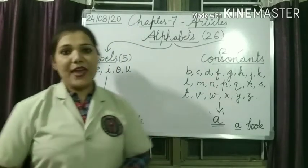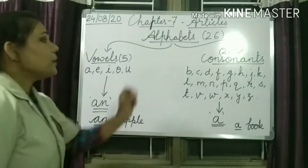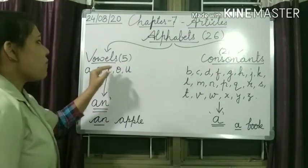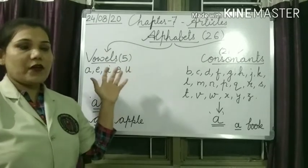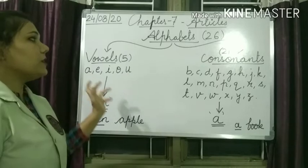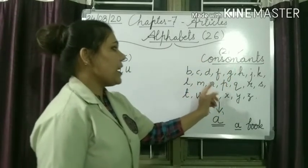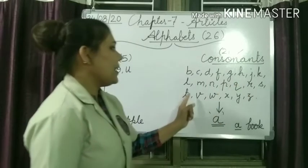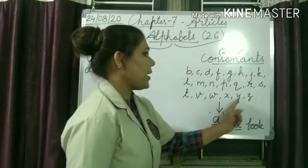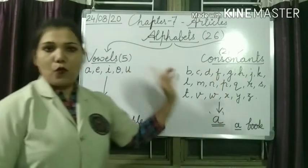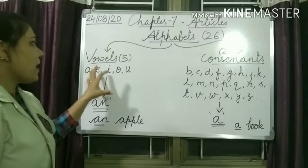We have a total of 26 alphabets in English. Among those, we have 5 vowels: A, E, I, O, U. On the other hand, we have 21 consonants — all letters other than these 5 vowels. You must have learnt about vowels in previous classes also.